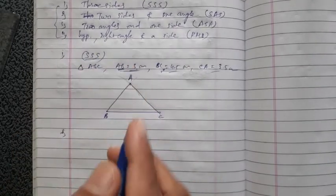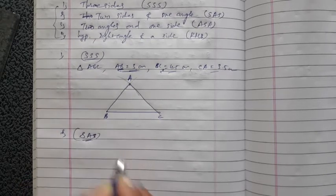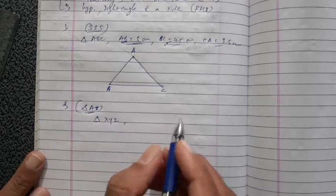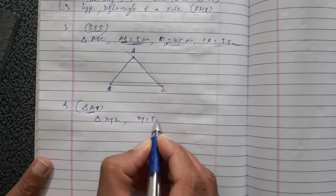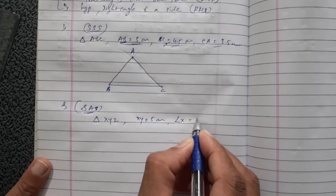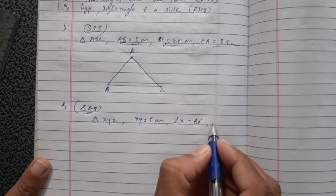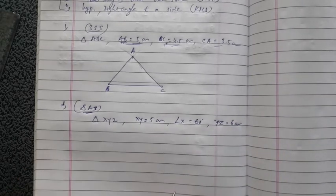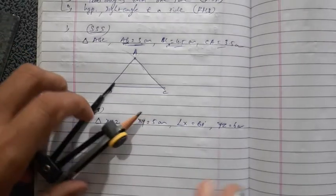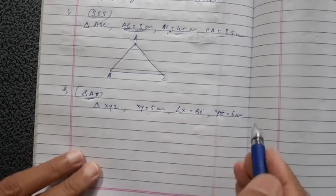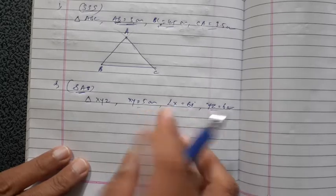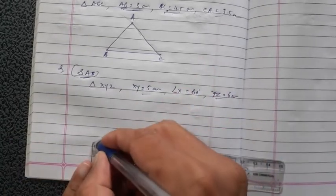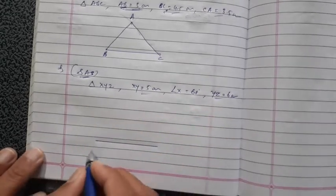Second example: when two sides and one included angle are given — that is SAS. For example, triangle XYZ is there. Suppose XY = 5 cm, angle X = 60 degrees, and YZ = 6 cm. We start with any one side — suppose we start with XY. XY = 5 cm, so draw a line segment with measurement 5 cm, like that. That is XY.